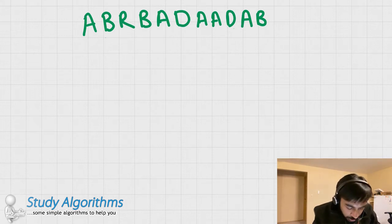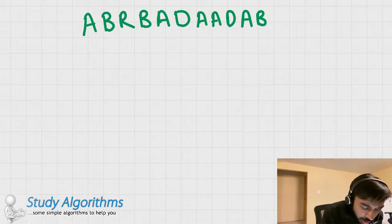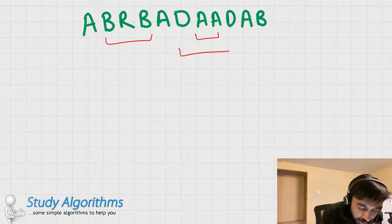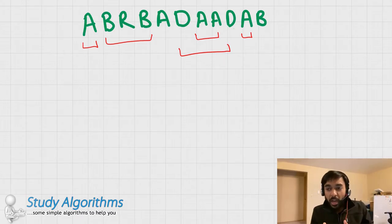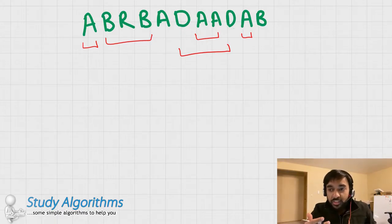For example, let us go back to our previous case. As you can see, this example has a lot of smaller palindromes. We have BRB, we have AA, we have DAAD, and then we have even the single letters are palindrome in itself. So we have A over here, then A again over here. So one can imagine that the problem might get out of hand pretty quickly. So let us try to think of an efficient way to solve this problem.